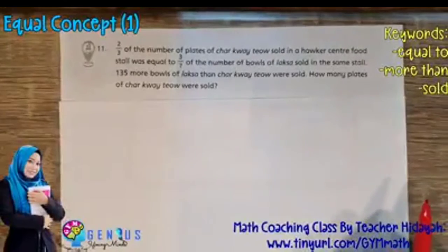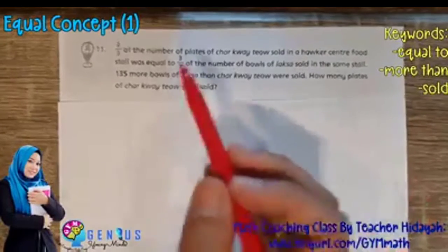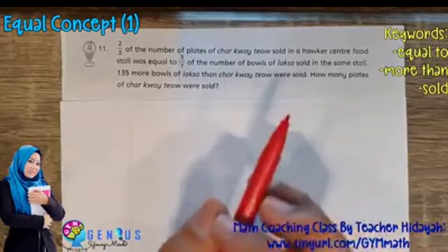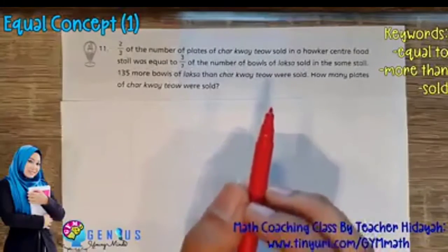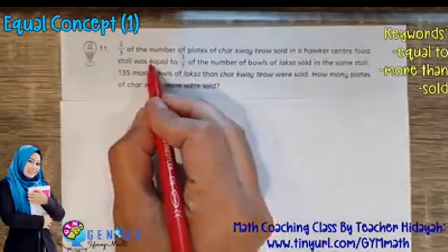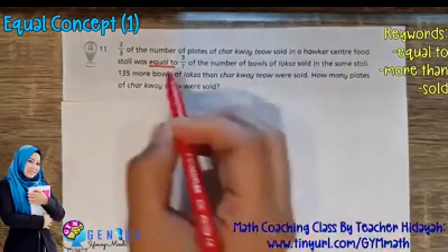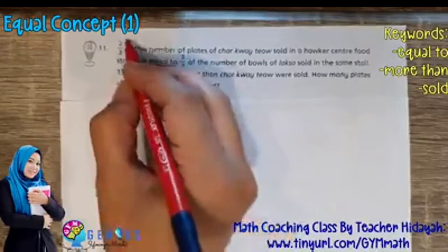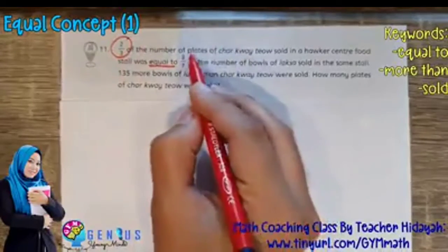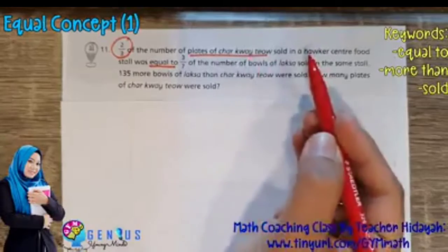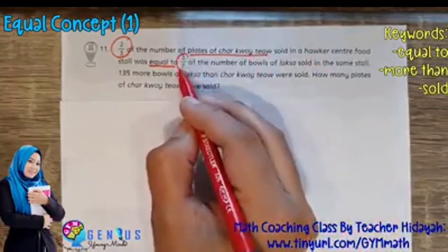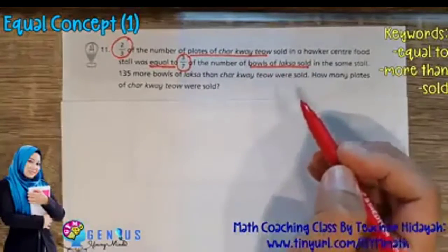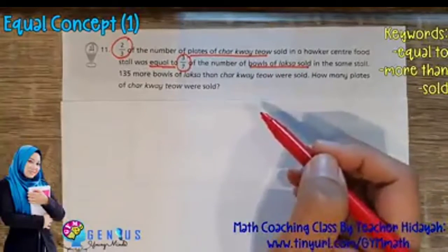Okay, here we have an equal concept question involving fractions. So how do I know this is equal concept? Number one, we have to identify the main keyword, which is actually equal to. Can you see? So whenever you have a question that has equal to, and before this equal to, you have a fraction of an item, and then another fraction after the equal to of another item, then straight away, this is the equal concept.